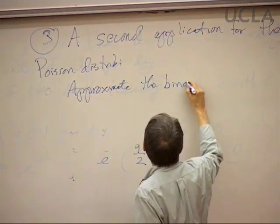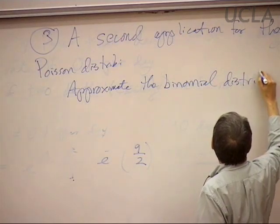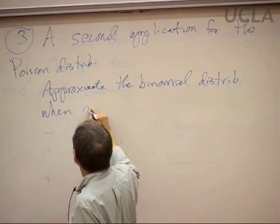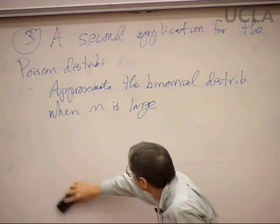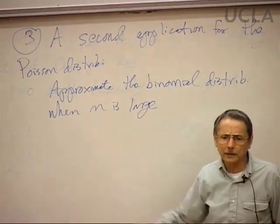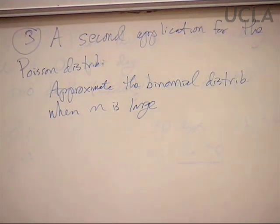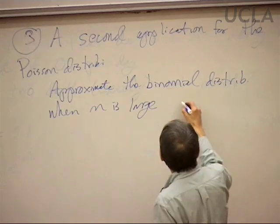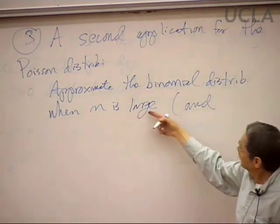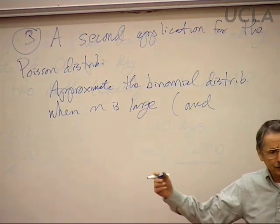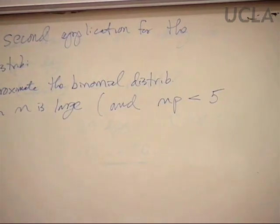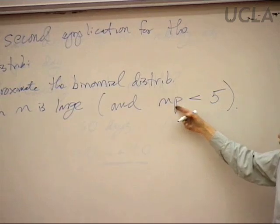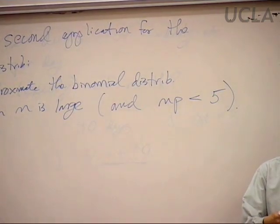That second application: you can use the Poisson distribution to approximate the binomial distribution. For large n, computing binomial probabilities is a nuisance — you're raising the failure probability to a large power. As a rule of thumb, this approximation should only be used when n times p is less than five, because otherwise it becomes somewhat inaccurate. If n times p is more than five, we'll have another approximation method later.